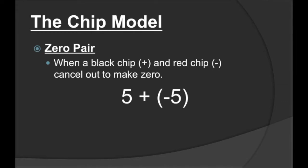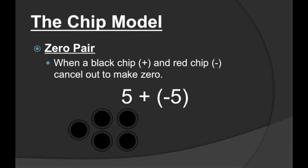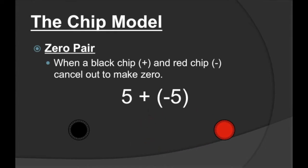Here's another example: five plus negative five. Positive five means we have five black chips, and negative five means we have five red chips. Same thing as before — we can make zero pairs. The five chips will cancel out with each other and create zero. Think about that: if you have five and then you lose five, your answer is going to be zero. That's essentially what a zero pair does — it cancels the numbers out, creating zero.